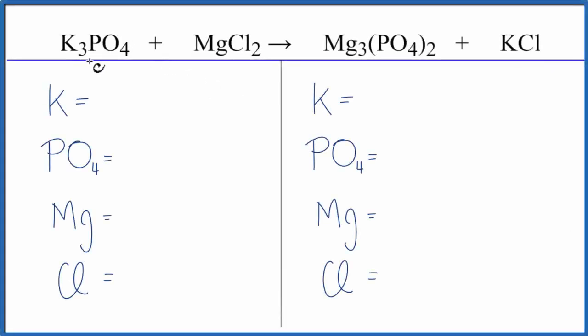To balance this equation, K3PO4 plus MgCl2, that's potassium phosphate plus magnesium chloride, let's count the atoms up on both sides.